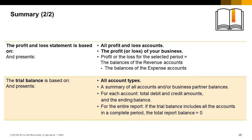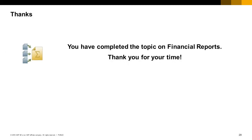The trial balance is based on all account types and presents a summary of all accounts and/or business partner balances. For each account, the report shows the total debit and credit amounts and the ending balance. If the trial balance includes all accounts in a complete period, the report balance will be zero. You have completed the topic on financial reports. Thank you for your time.